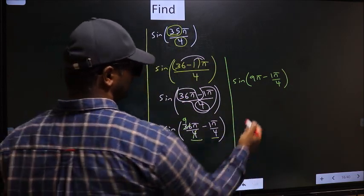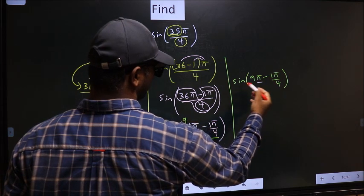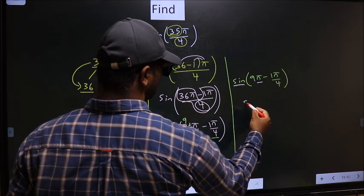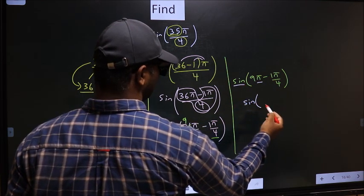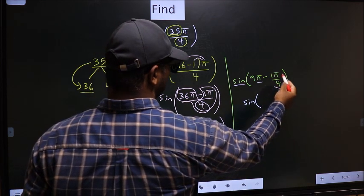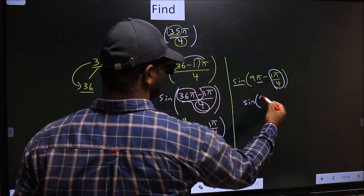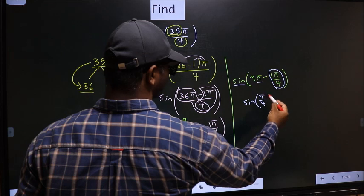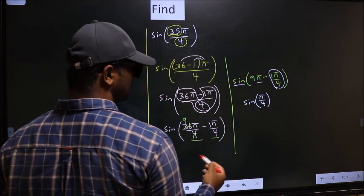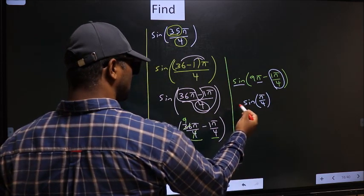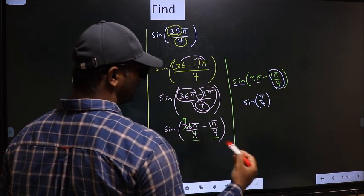Next, here we have π. So sin is not going to change. It will remain sin. And inside we get this angle π by 4. Now the question is, will we get here plus or minus?